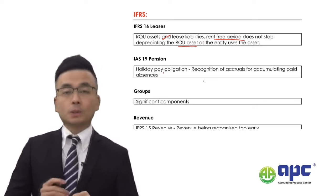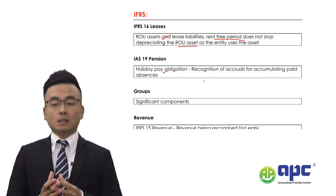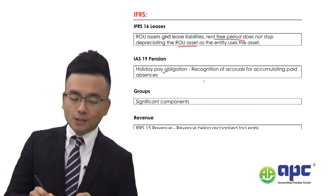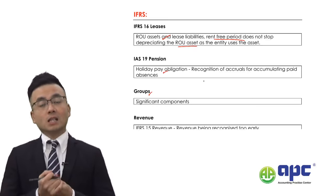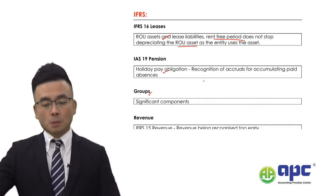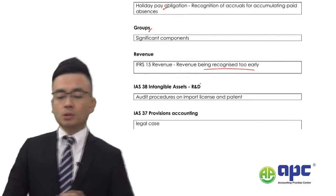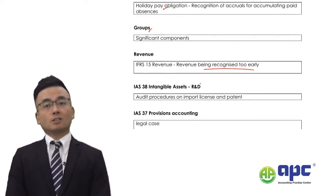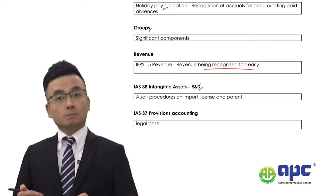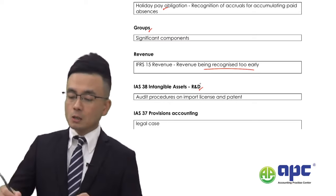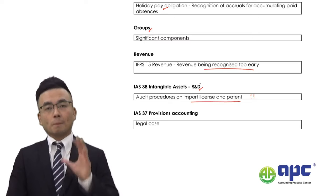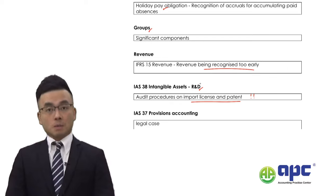Regarding holiday pay obligation, make sure you know how to account for the accrued expense for accumulating paid absences. ISA standards related to groups will be very important — in particular, significant component determination may come up. Revenue recognition from IFRS 15 is also relevant; there might be a risk that revenue is recognised too early. Related to capitalised development expenditure, a more important area would be audit procedures on import licences and patents — make sure you read the example answers and my notes carefully.